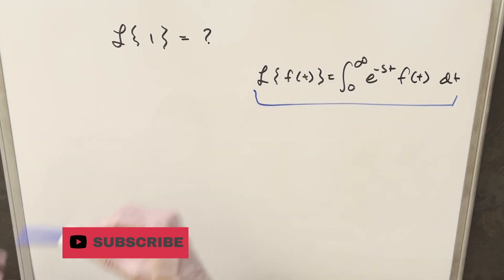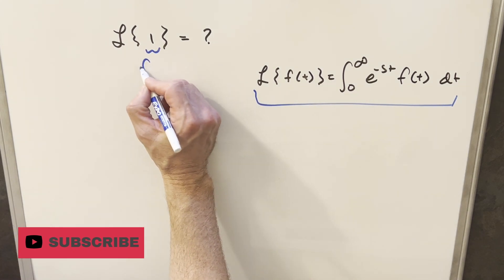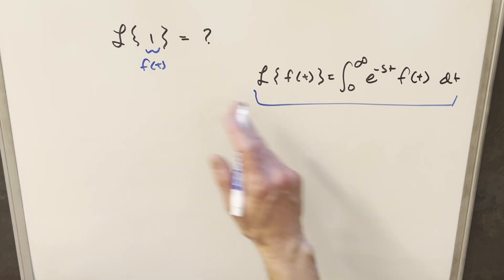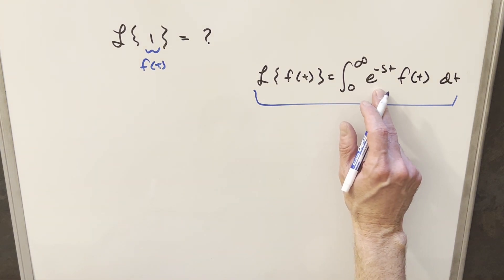But it's this integral specifically from zero to infinity, and we have our function, so like in this case of the problem we're doing, our function f(t) is just 1, but the integral is going to be multiplied by e to the minus st.